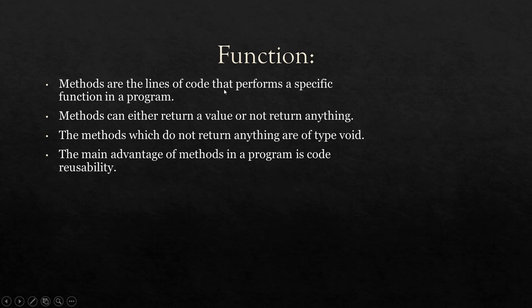Methods are lines of code that perform a specific function in a program. For example, let's say I have a printer. A printer has a specific task — it gives us a hard copy of whatever file we pass to it, whether it is a PDF, an image, a Word document, or anything else. The main function of the printer is to give us a hard copy which we can feel and touch.